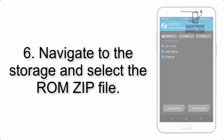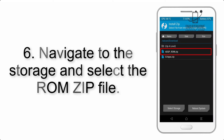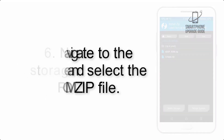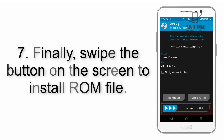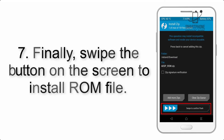Step 6: Navigate to the storage and select the ROM zip file. Step 7: Finally, swipe the button on the screen to install the ROM file.